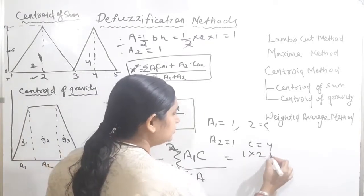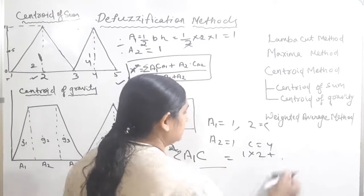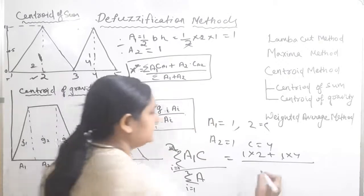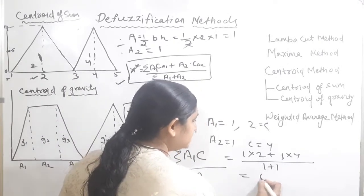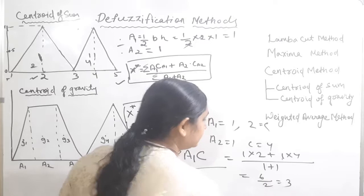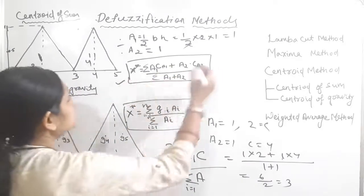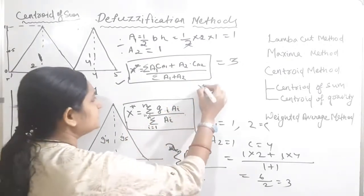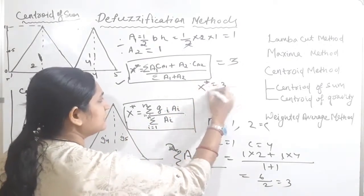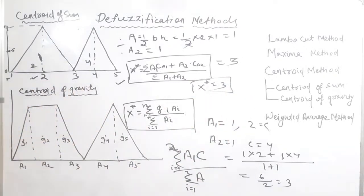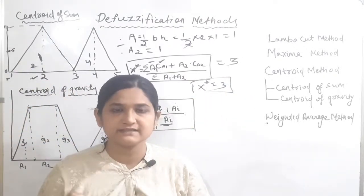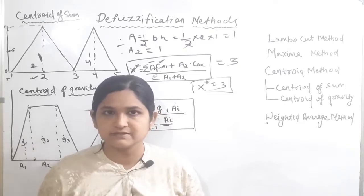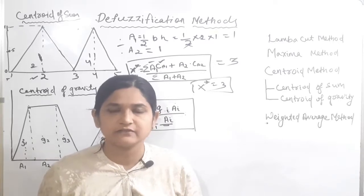Applying the formula: numerator is A1 times centroid1 plus A2 times centroid2, which is 1 times 2 plus 1 times 4, giving 6. The denominator is A1 plus A2, which is 1 plus 1, giving 2. So x star equals 6 divided by 2, which is 3. This is the crisp value obtained through the centroid of sum method.